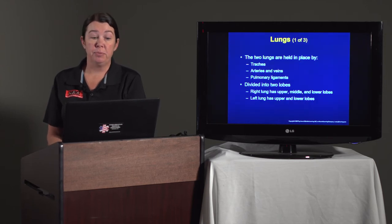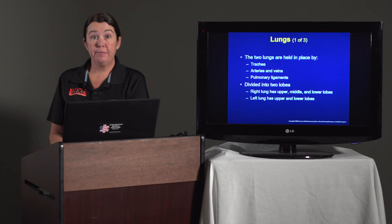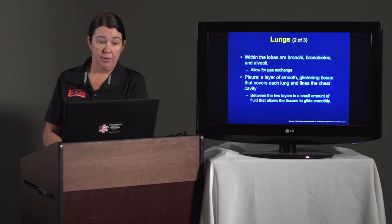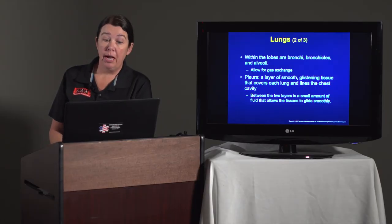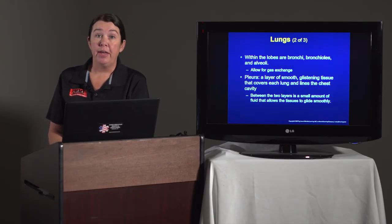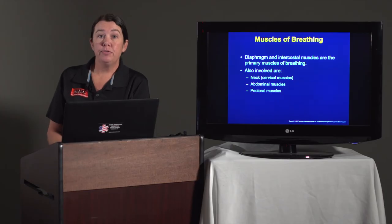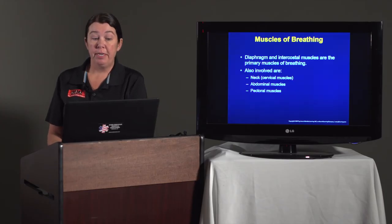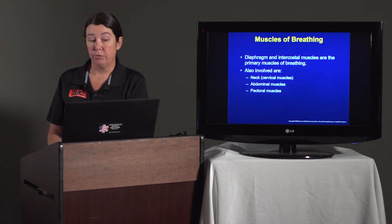Two lungs are held in place by the trachea, arteries and veins that innervate the lungs, and the pulmonary ligaments. The lungs are divided into lobes — there are two on the left side and three lobes on the right side. Within the lobes are bronchi, bronchioles, and then alveoli. The pleura is a layer of smooth glistening tissue that covers each lung and lines the chest cavity. The muscles used for breathing include the diaphragm and intercostal muscles, which are the primary muscles for breathing.